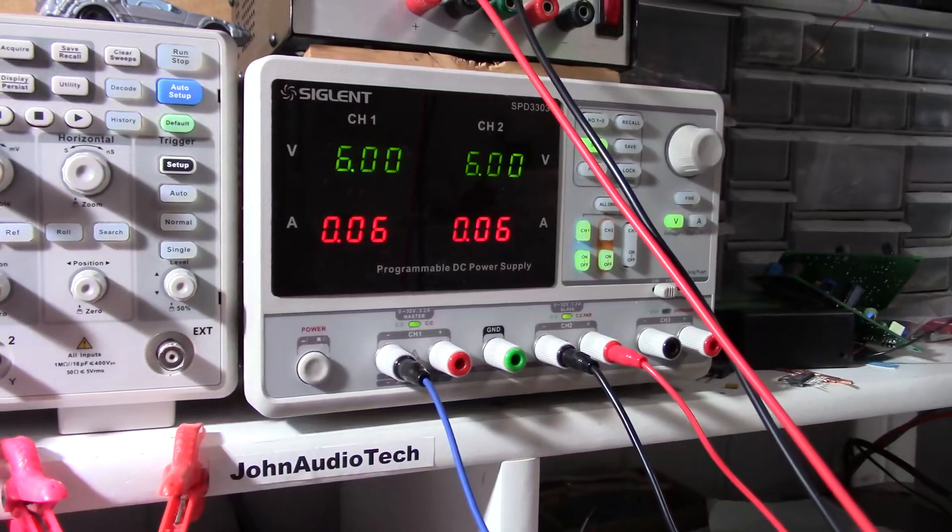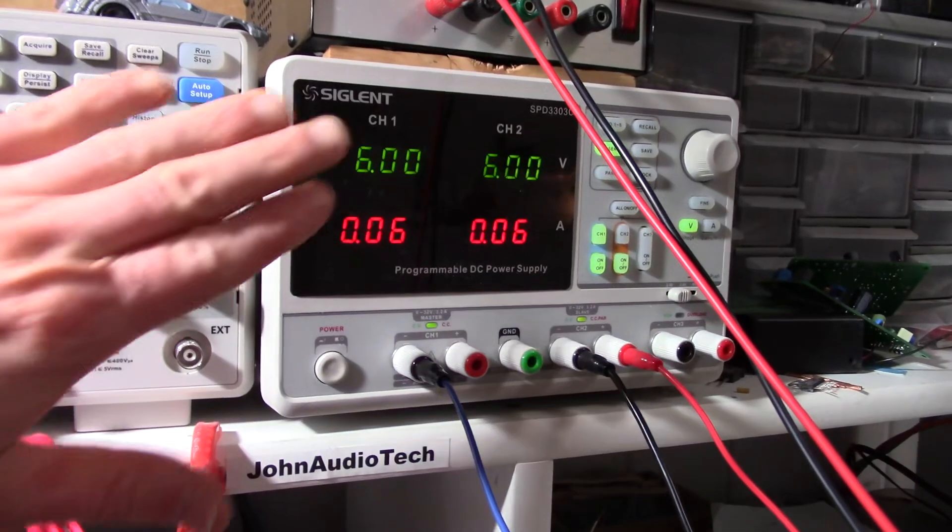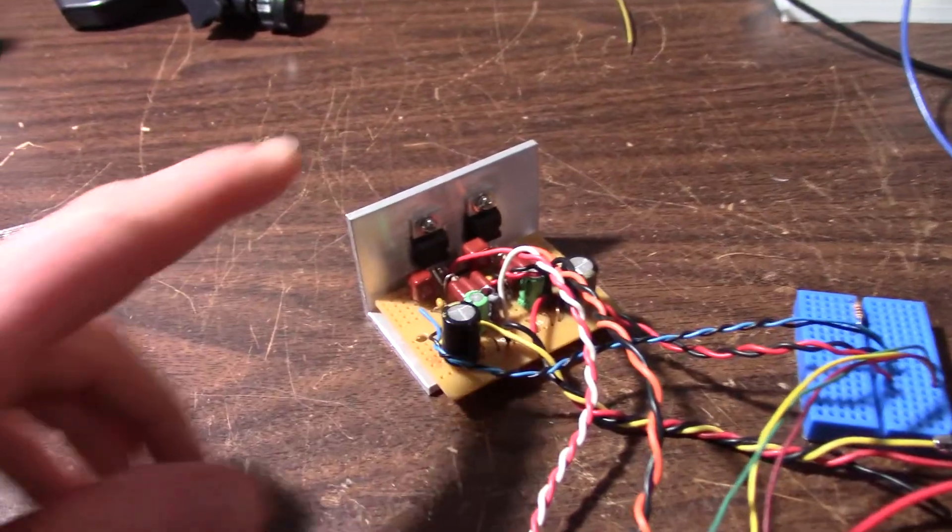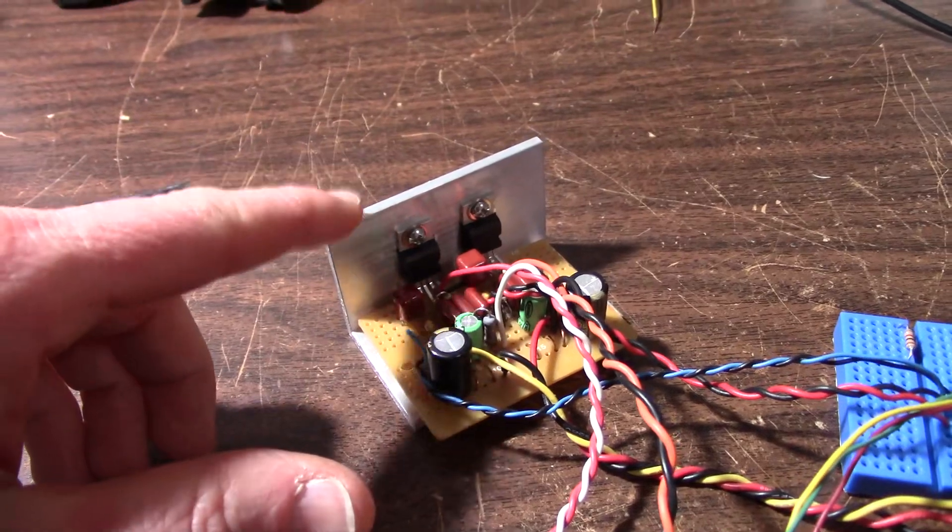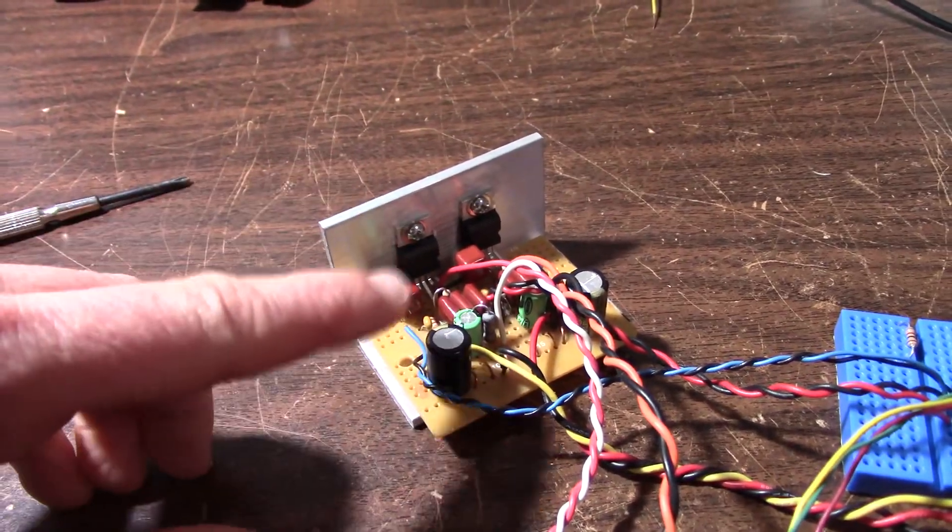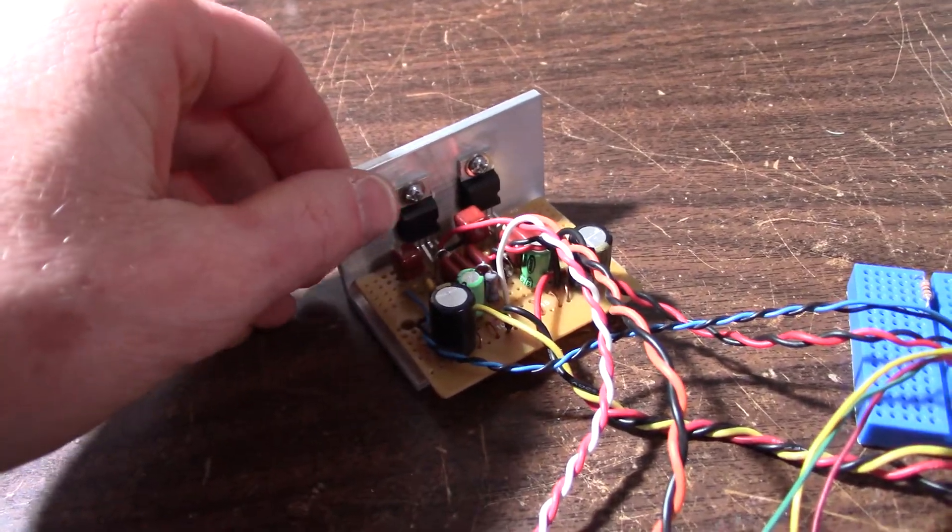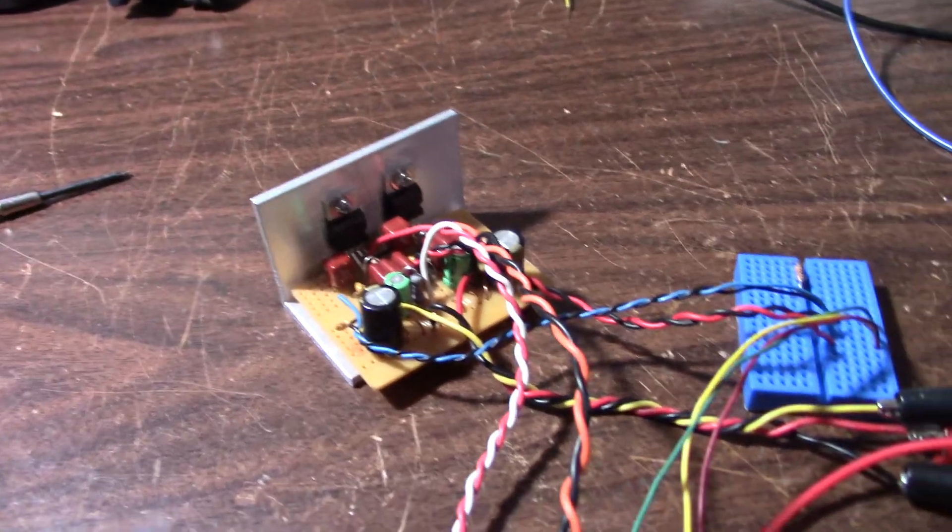Got it hooked up to the supply for plus and minus 6 volts. If I didn't mention before, I'm not going to run it at a higher voltage because I'm not going to put it on the heat sink and I don't want it to get too hot on the small bracket. So we'll go ahead and press play here.